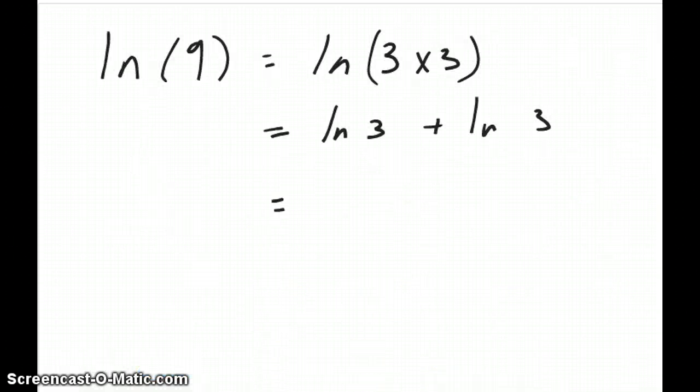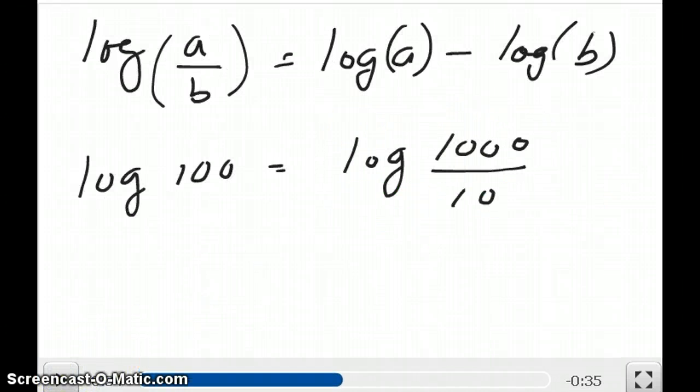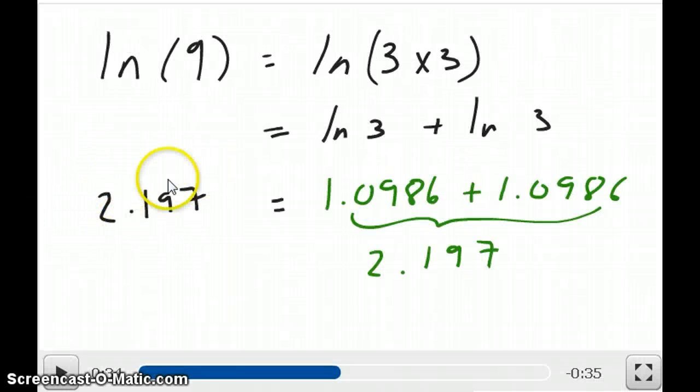You can also do this with natural logs. So ln of 9, for example, is going to be equal to ln of 3 times 3, which is ln of 3 plus ln of 3. And if we were to enter ln of 9 in our calculator, we would get 2.197. And if we were to do ln of 3, we get 1.0986. And there's two of them. So it's this plus that. And that is the result, which is, of course, equal to 2.197 as well.